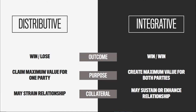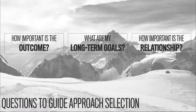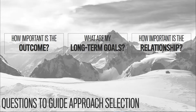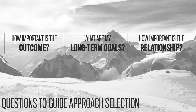For us to delve into distributive approaches, there are three questions that I mentioned in the live stream session and things that you need to keep in mind. One of the collateral issues in distributive negotiations is it may damage the long-term relationship. Before you engage in these strategies and approaches, there are three questions to keep in mind: How important is the outcome? What are my long-term goals? How important is the relationship? If the outcome or your long-term goals lend itself to a distributive approach, or if the long-term relationship isn't that important, that may be an area where you engage in distributive negotiation approaches.